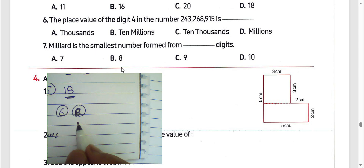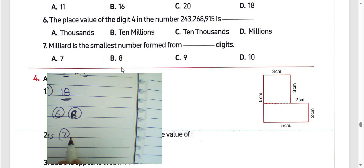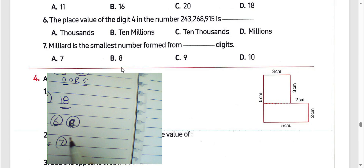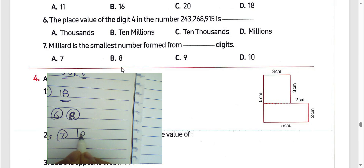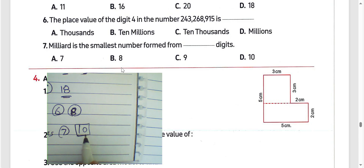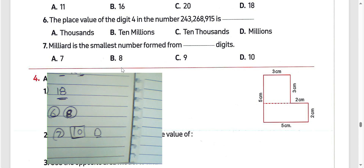Next, question number 7: the smallest number formed from ten digits — a million has ten digits. Choose letter D.